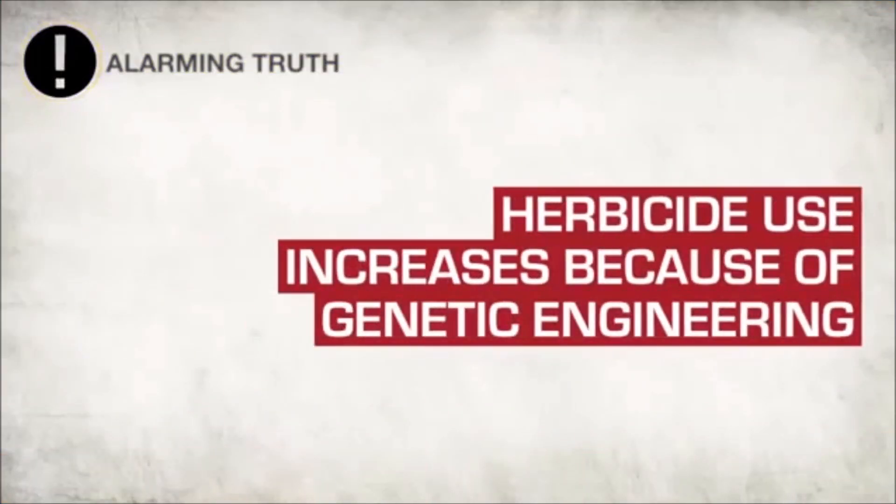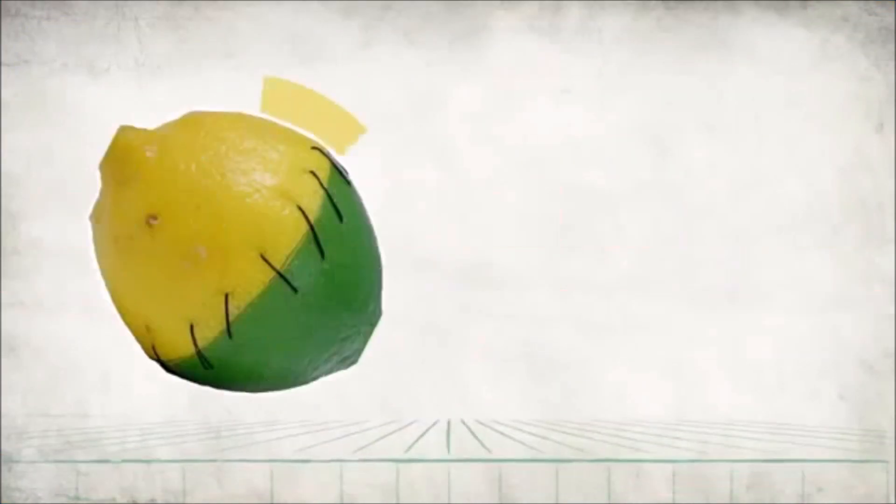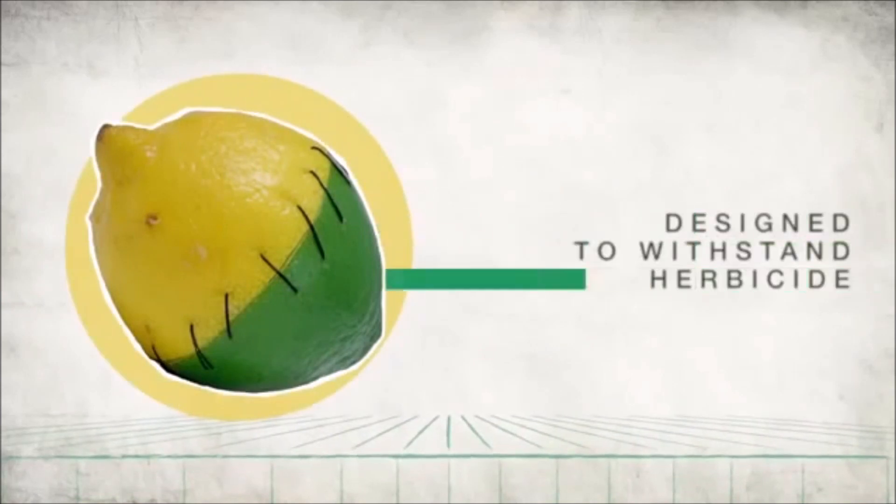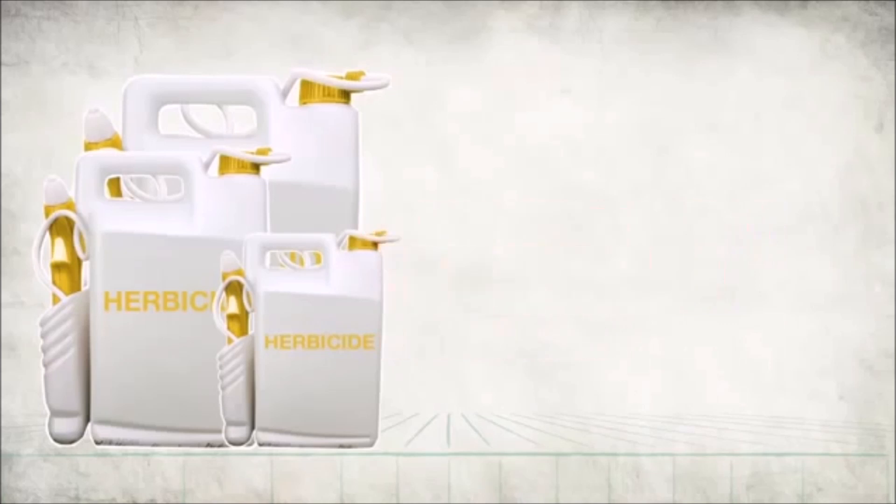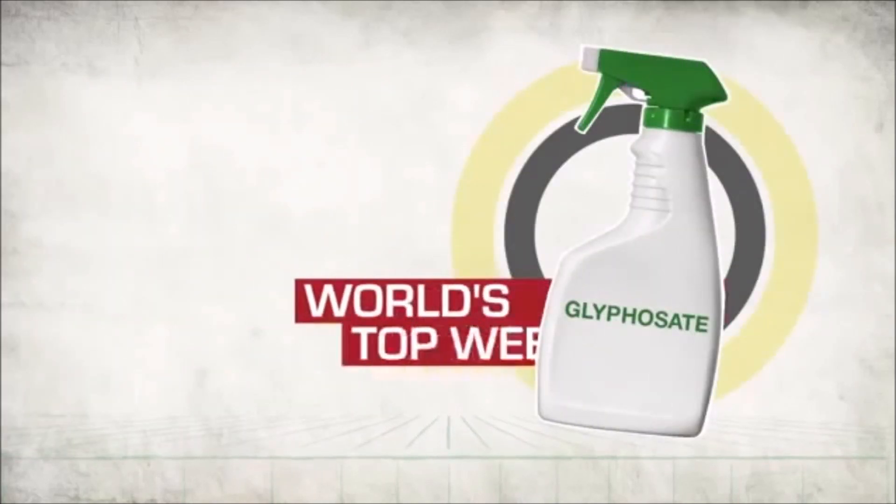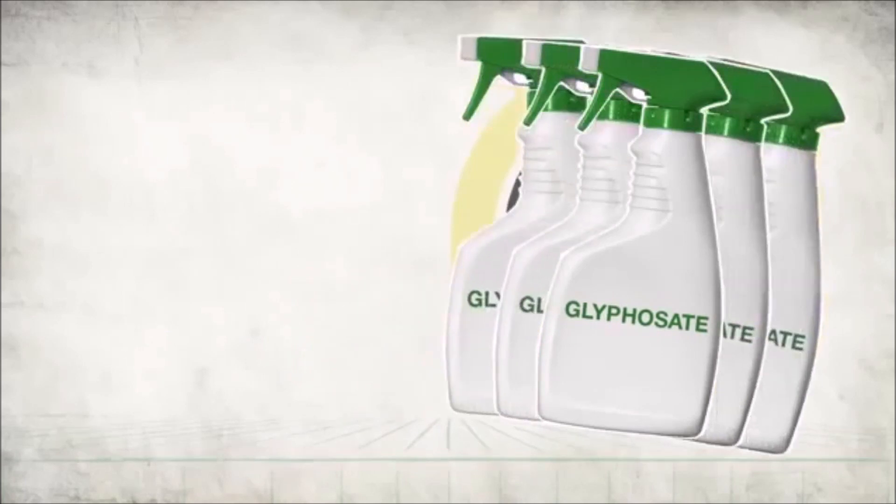Herbicide use increases because of genetic engineering. GE crops, which are designed to withstand herbicides, actually cause hundreds of millions of pounds of additional herbicides to be applied to farmlands. In fact, glyphosate, the world's top weed killer, has greatly increased in use due to the spread of GMOs.